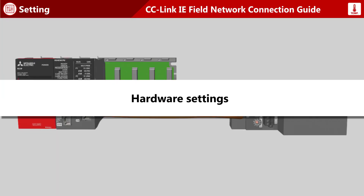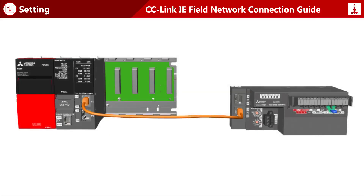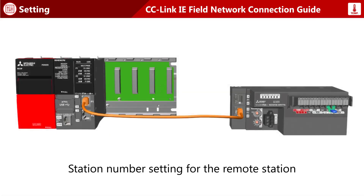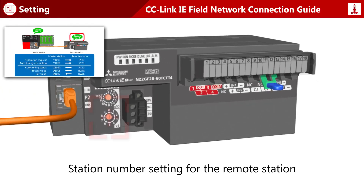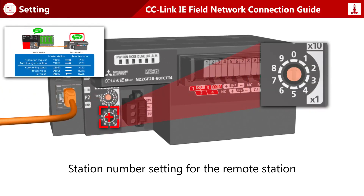The procedure for hardware settings is described. Station numbers for remote stations are set using the switch on the front of the module. The remote station is station number one, so set the station number to one using the single digit switch.